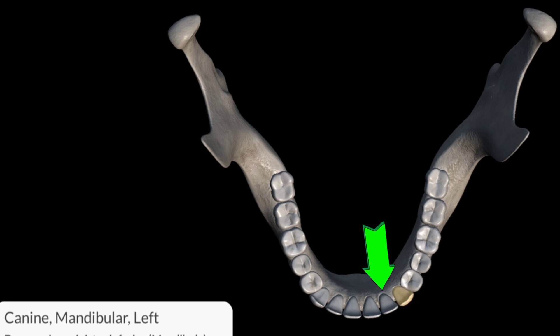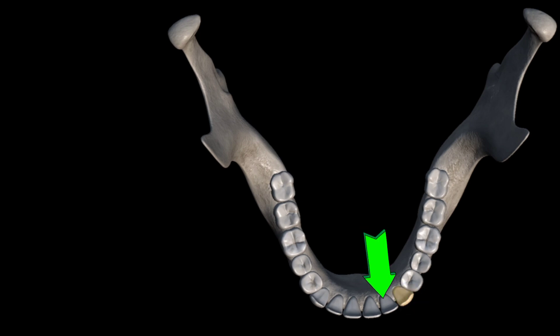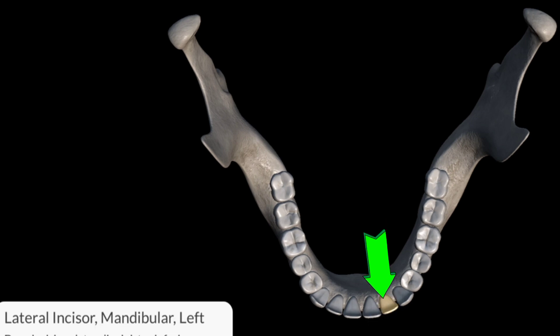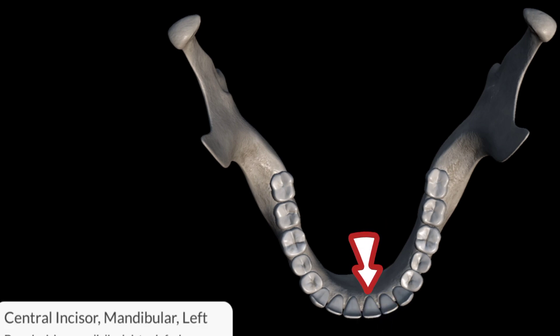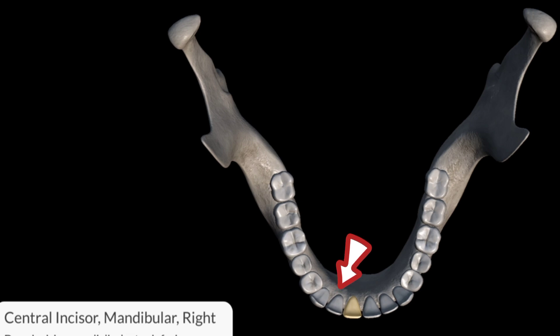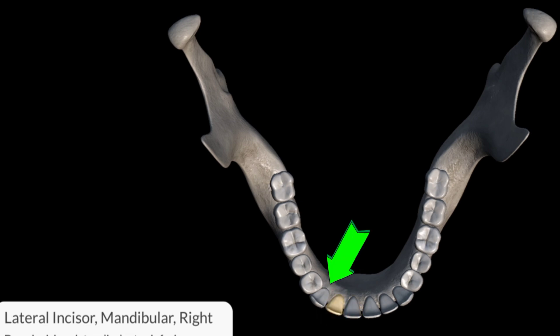This is the lateral incisor of the left side of the jaw. This is the central incisor. This is also the central incisor. This is the lateral incisor. This is the canine of the right side.